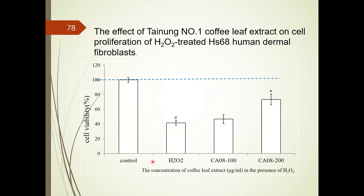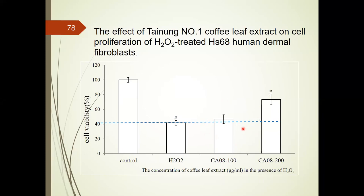We used H2O2 to treat human dermal fibroblasts to induce oxidative stress. H2O2 treatment showed only 40% cell viability. However, when we pre-treated human dermal fibroblasts with Tainone No. 1 coffee extract before H2O2 treatment, the results showed a protective effect on cell viability in comparison with H2O2-treated cells. Tainone No. 1 coffee leaf extract dose-dependently increased cell viability compared to H2O2-treated cells.